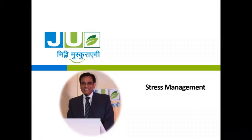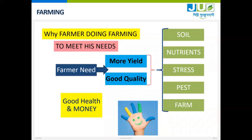Today we will talk about stress management. Last week I talked about soil and nutrition, because for the farmer it is important to get more yield and that is of good quality. I explained five factors: soil nutrients, stress, pest, and farm management. Two things I talked about in my earlier presentation — today I will talk about stress.